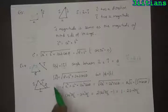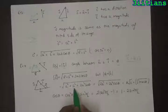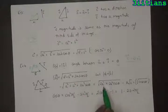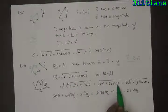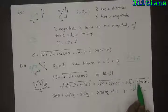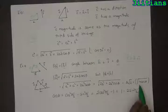Substituting b equal to a, c vector will become equal to the square root of a squared plus a squared plus 2a squared cos theta, which equals the square root of 2a squared (1 plus cos theta), which equals a root 2 into the square root of 1 plus cos theta.